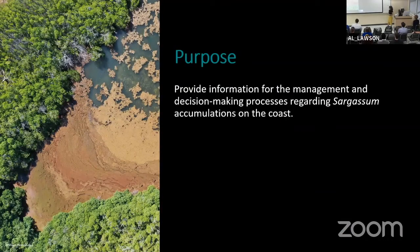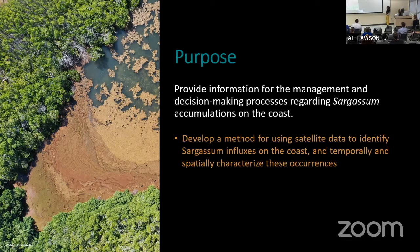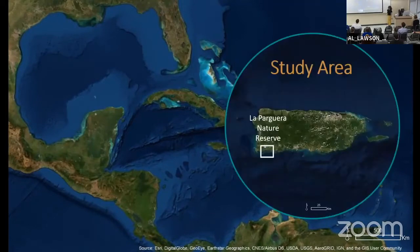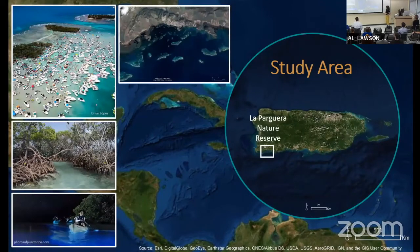The overall purpose of this research was to provide information for the management and decision-making processes regarding sargassum accumulations on the coast. This first chapter specifically is about developing a method for using satellite data to identify these accumulations in the coastline, and also to assess the spatial and temporal dynamics of these hotspots of accumulation. The study area is in Puerto Rico, in the Caribbean Sea, specifically in La Vallera Nature Reserve — a very interesting and complex area with many keys, coral reefs, mangrove, even a luminescent bay, and it's very important for tourism and fisheries.